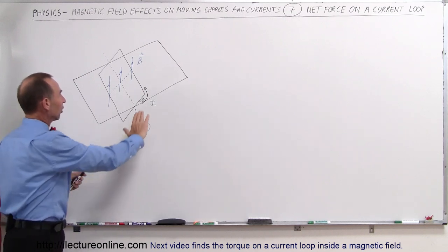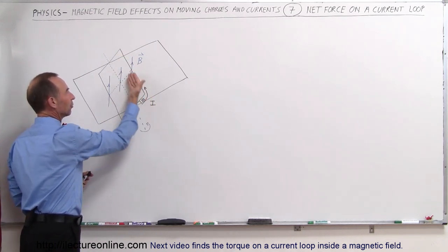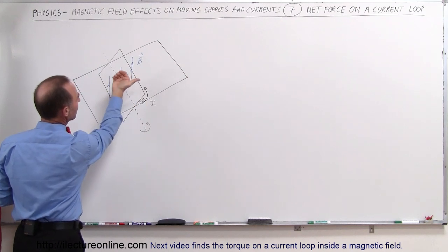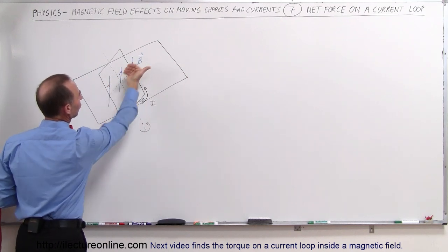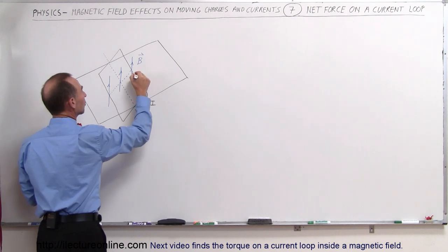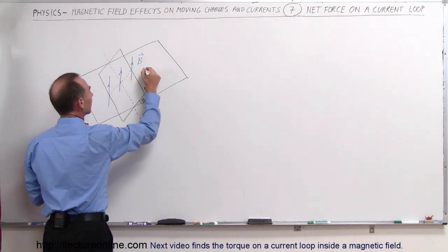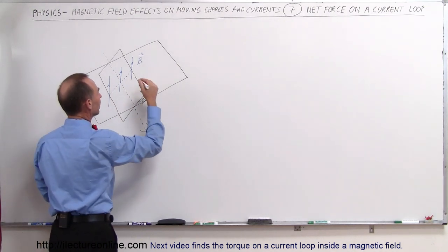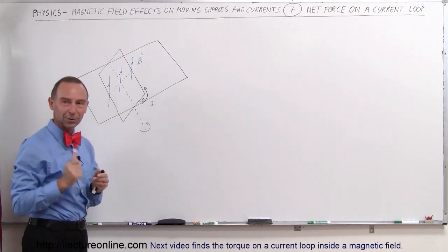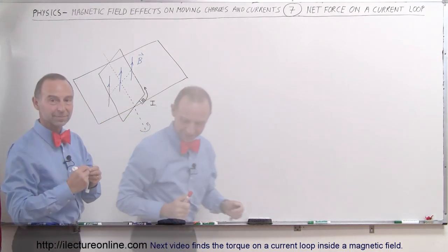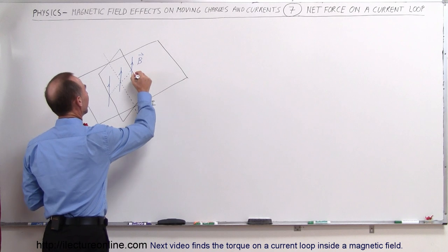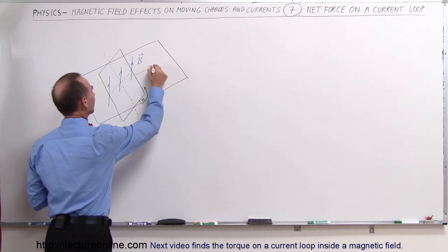Let's start with this side over here. We have a current flowing in this direction, and the B field coming out of the plane, so the force will be in this direction. Let's indicate that force in this direction.